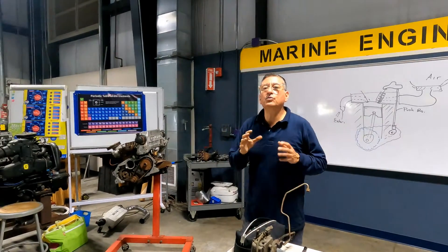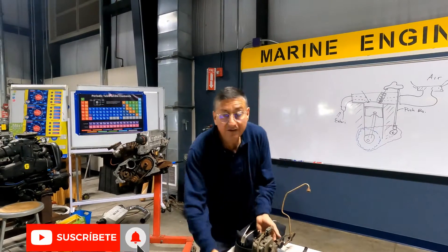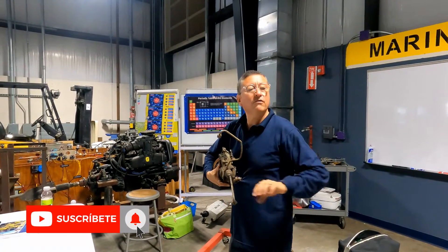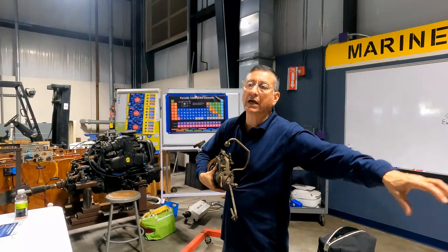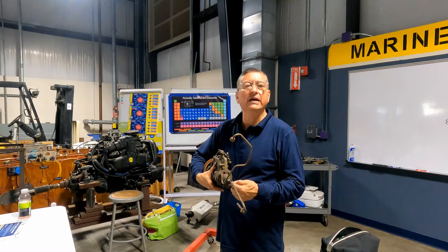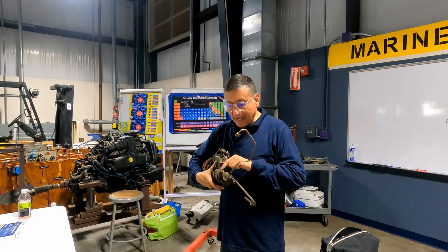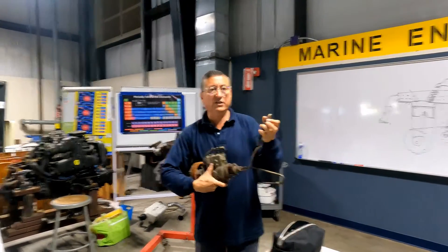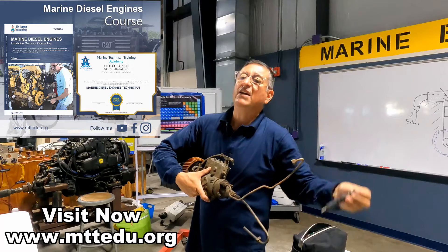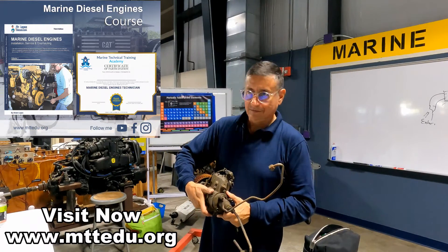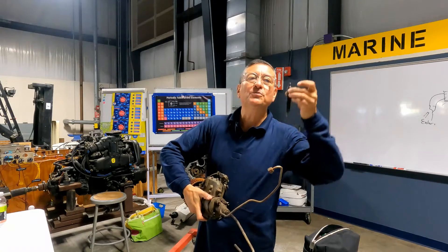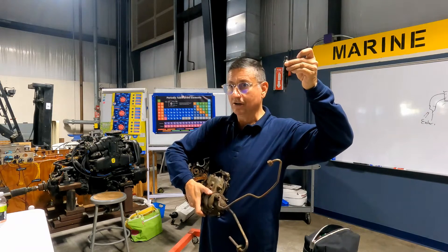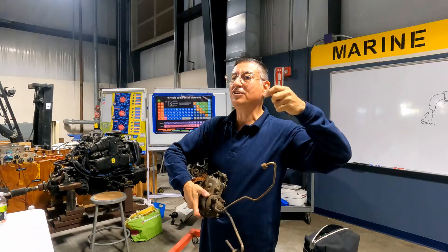In diesel engines there are two types of fuel injection pump. The fuel injection pump draws fuel from the tank at low pressure — 14 to 15 psi — and sends the fuel to each injector. If the combustion chamber is pressurized at 800 psi, the injector must open at 1200 or 1500 psi or more, otherwise it cannot inject the fuel.